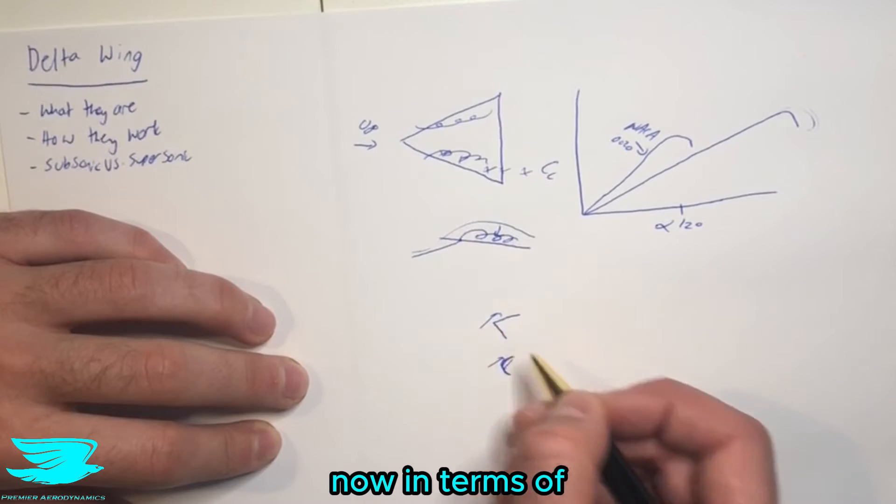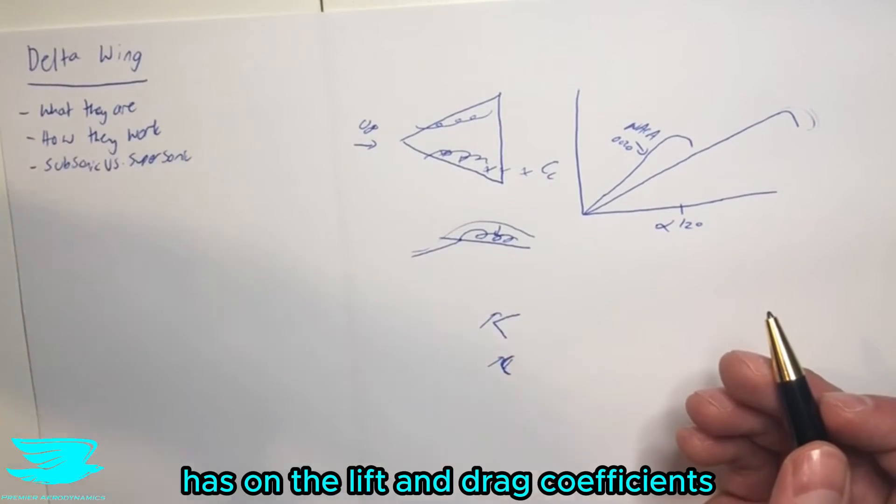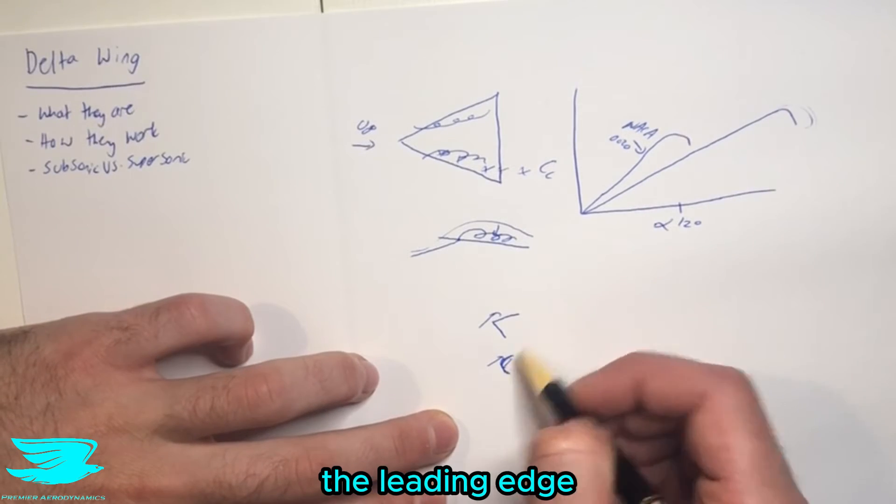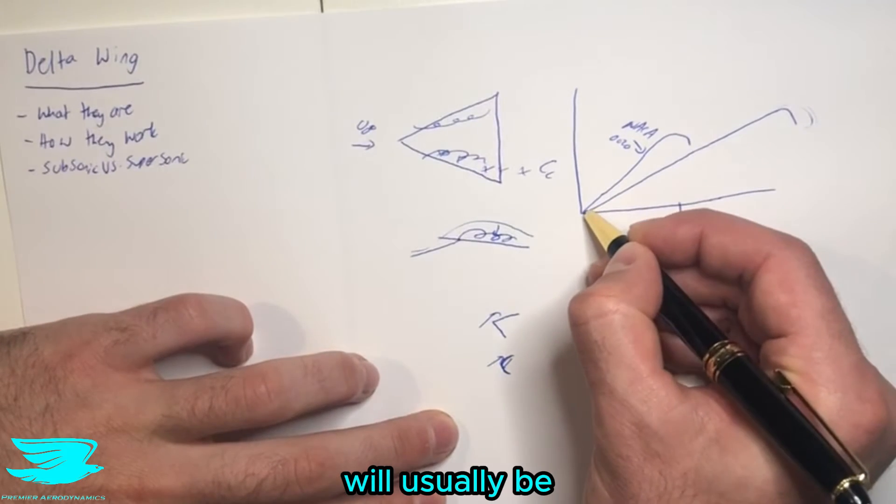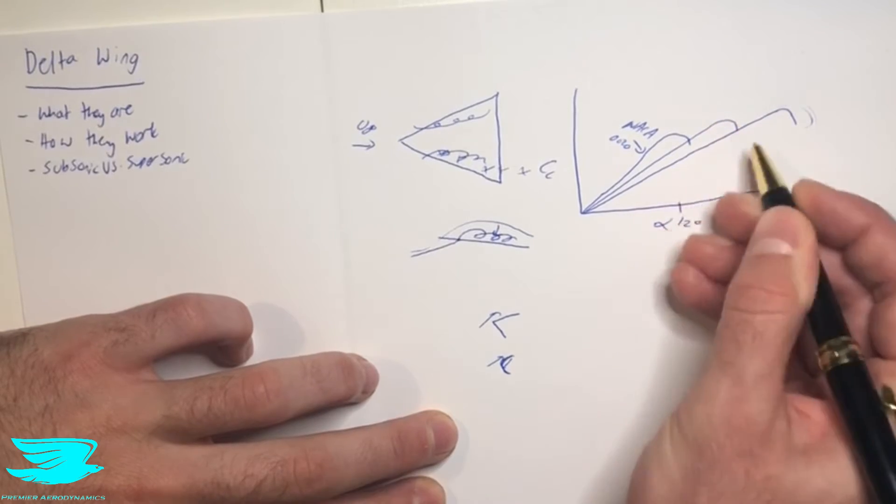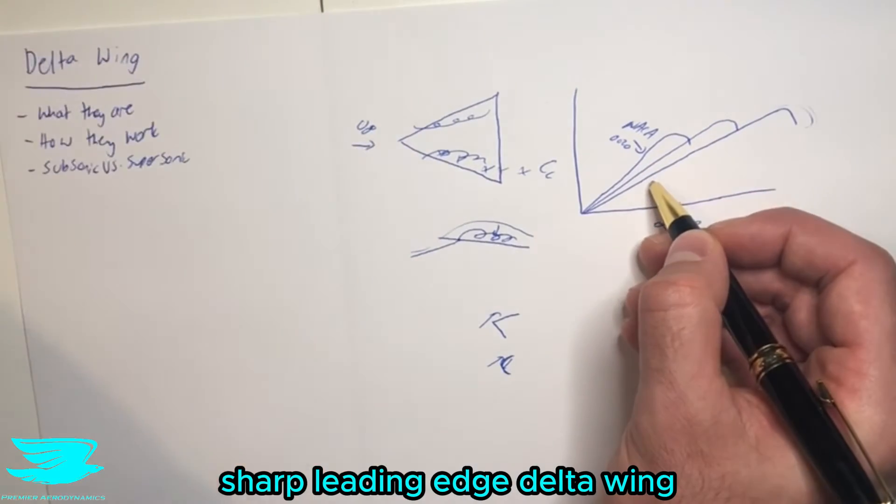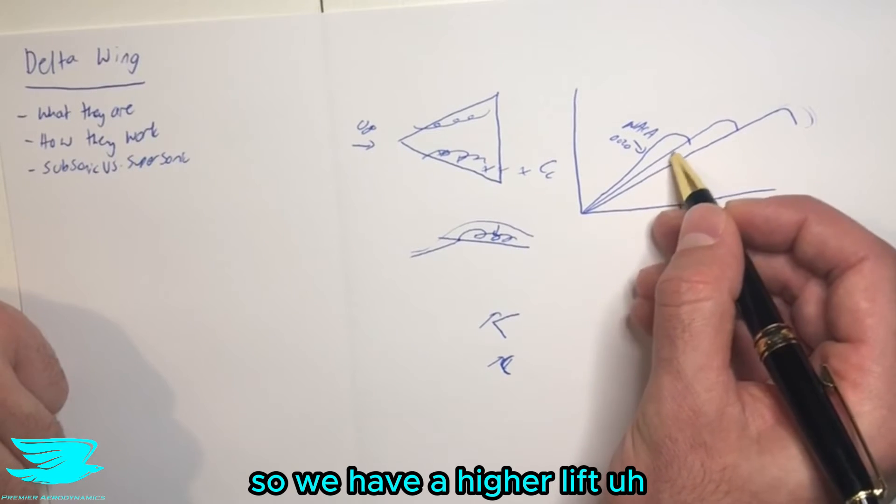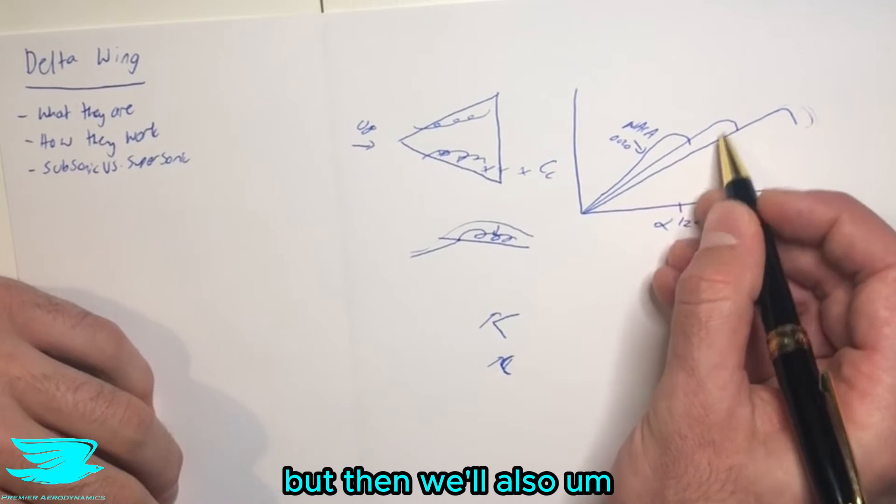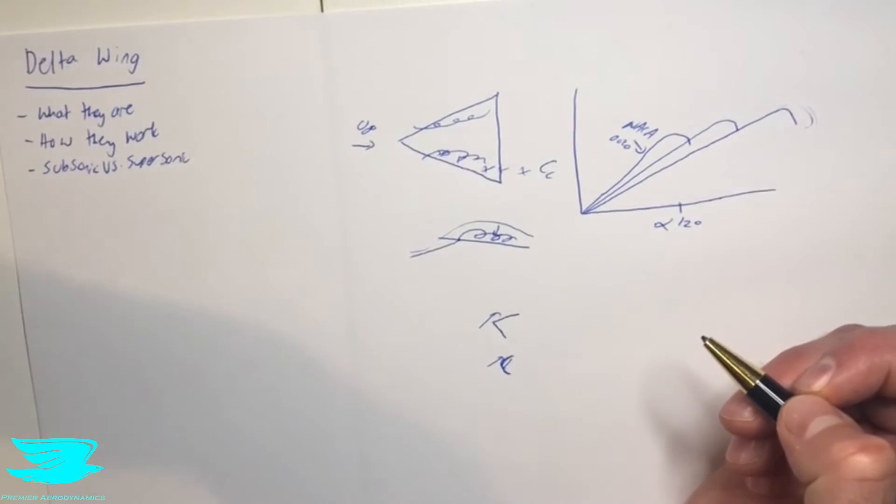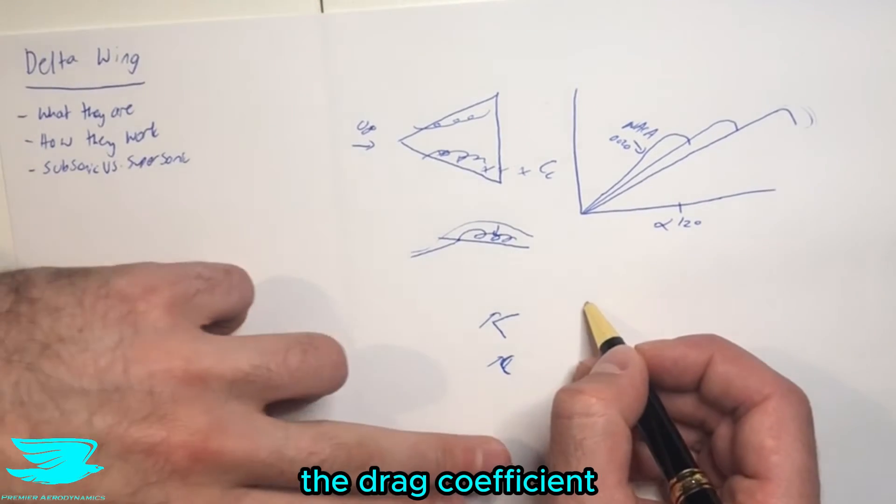Now in terms of what the effects it has on the lift and drag coefficient, let's look at this. So let's say we have the lift coefficient first, the leading edge which is rounded will usually be more like this. So it will be somewhere between not having a delta wing and having a very sharp leading edge delta wing. So we have a higher lift curve slope, but then we'll also get separation a little bit earlier.